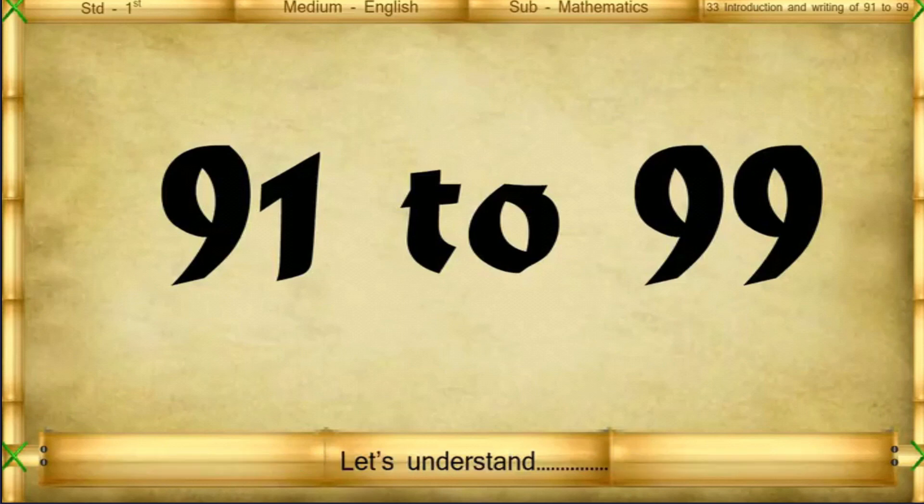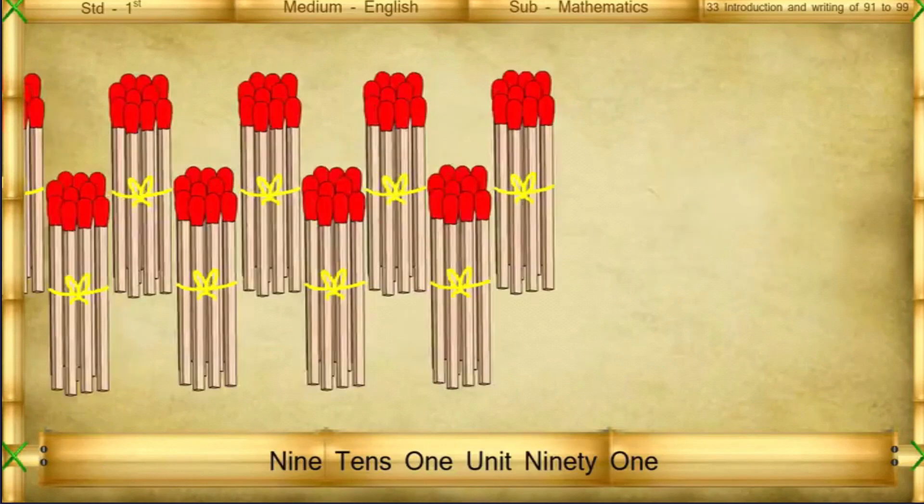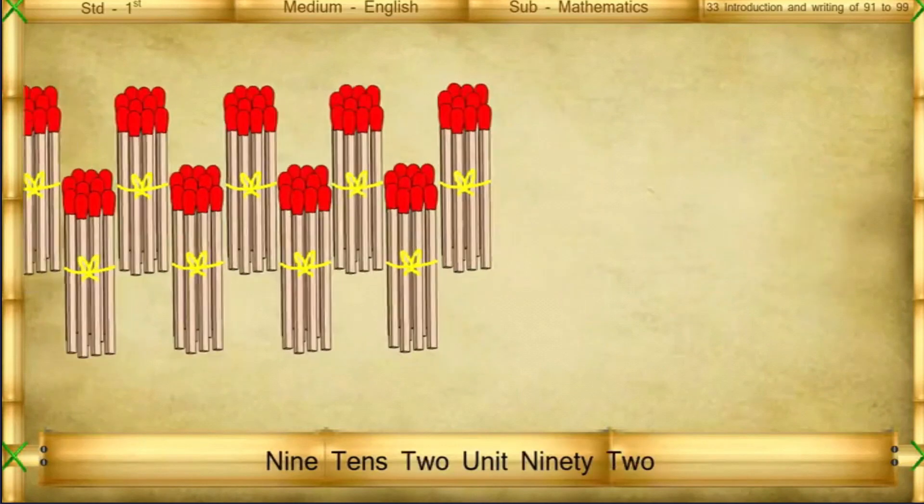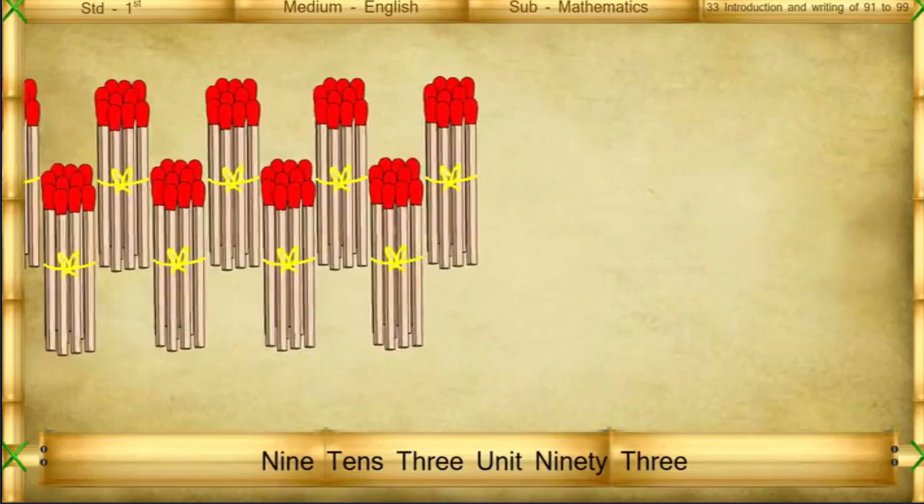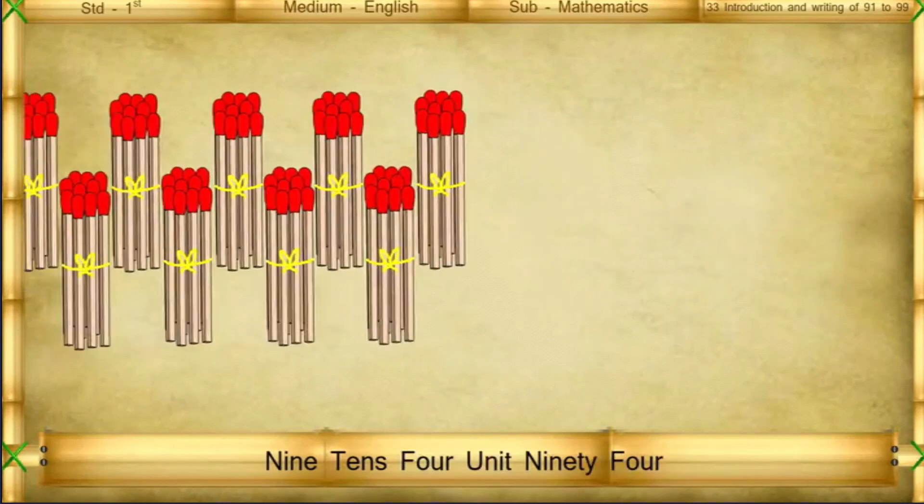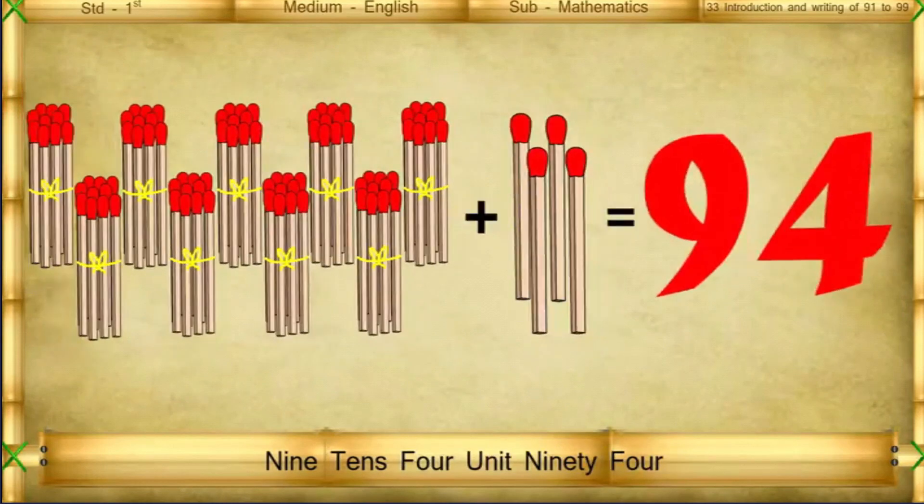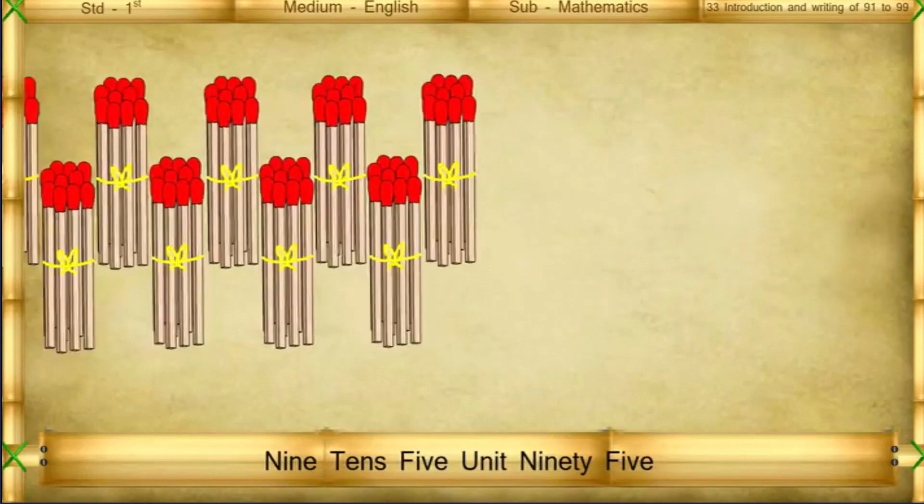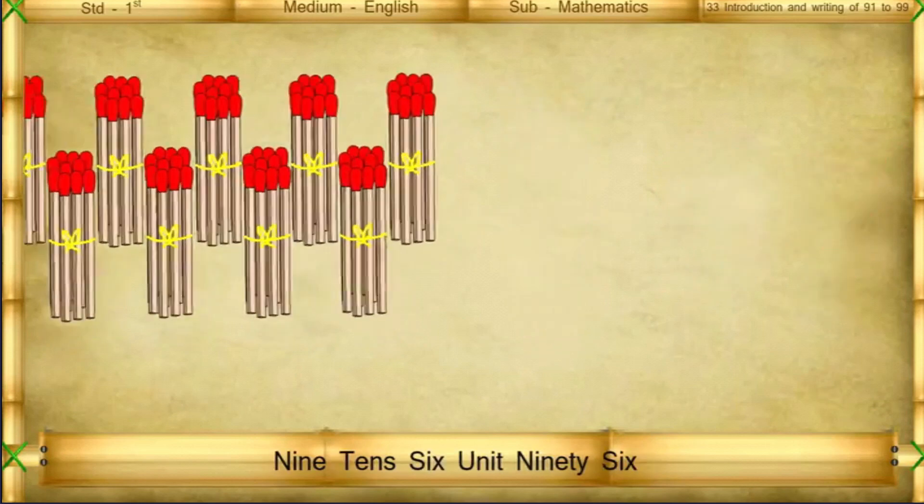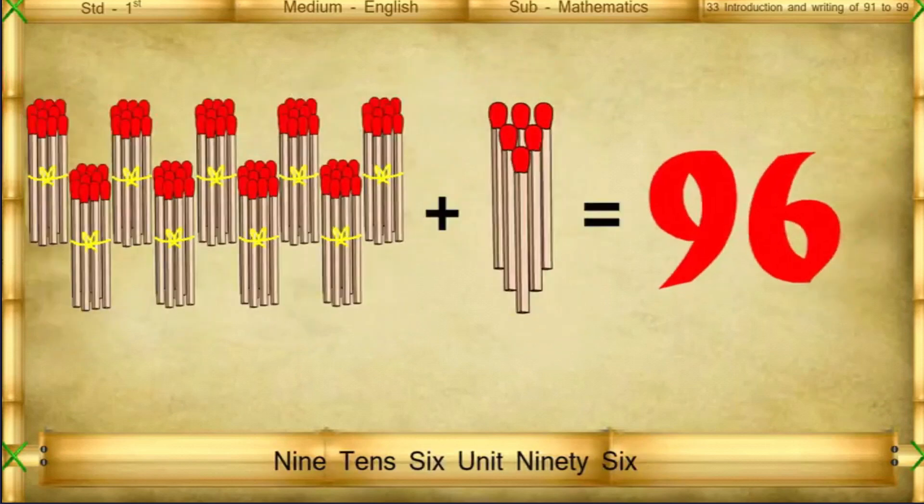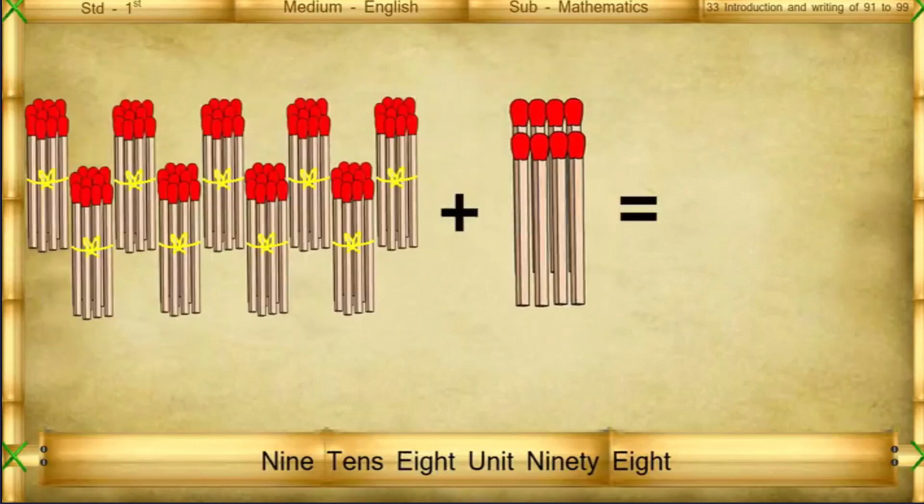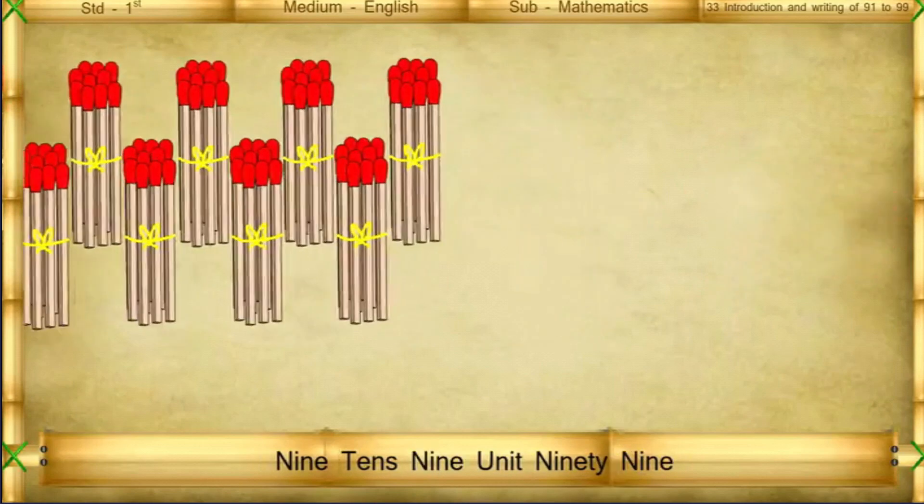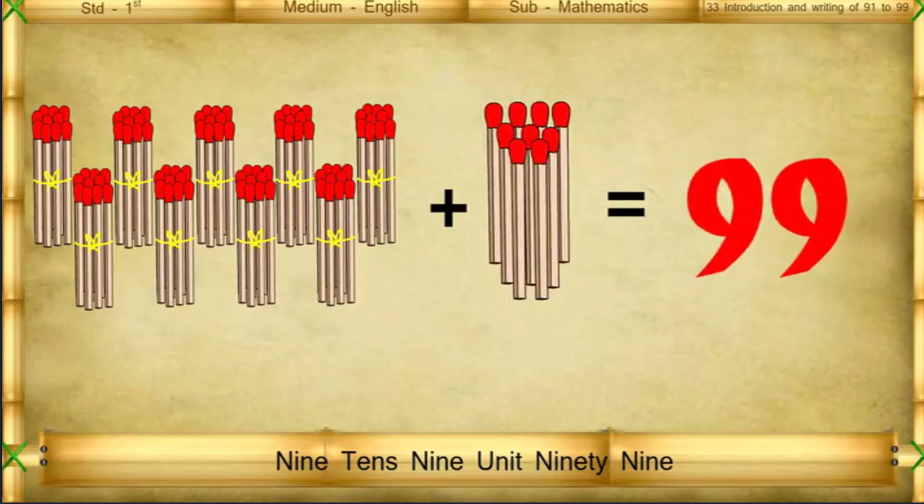Let's understand. 9 tens 1 unit: 91. 9 tens 2 units: 92. 9 tens 3 units: 93. 9 tens 4 units: 94. 9 tens 5 units: 95. 9 tens 6 units: 96. 9 tens 7 units: 97. 9 tens 8 units: 98. 9 tens 9 units: 99.